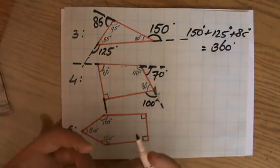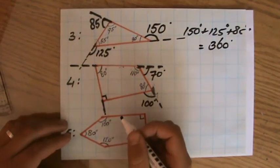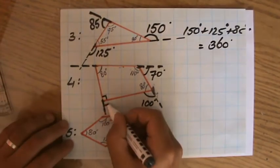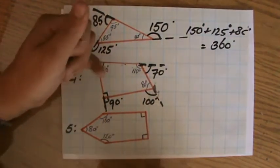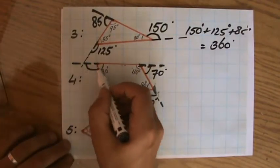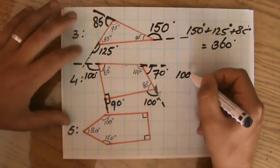80 as an interior angle, the exterior angle is 100 degrees. 180 minus 80, so 100 degrees. If I have a right angle on the inside, then my outside angle, my exterior angle, is also a right angle - 90 degrees. Interior angle of 80 degrees, exterior angle of 100 degrees.